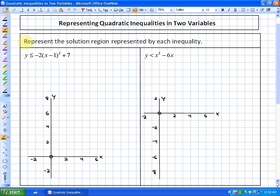We're just going to do two problems. This says represent the solution region represented by each inequality, and we want to represent the solution region where y is less than or equal to -2(x - 1)² + 7. Well, the boundary between where y is less than or equal to that is going to be the parabola where y equals -2(x - 1)² + 7. And that boundary in this particular case is going to be a solid boundary, which is included because it's included due to the or equal to sign.